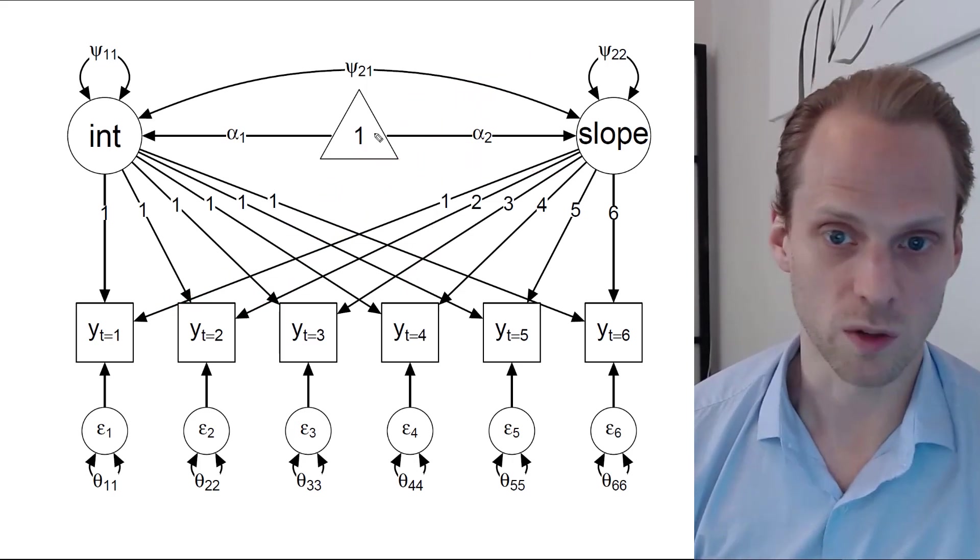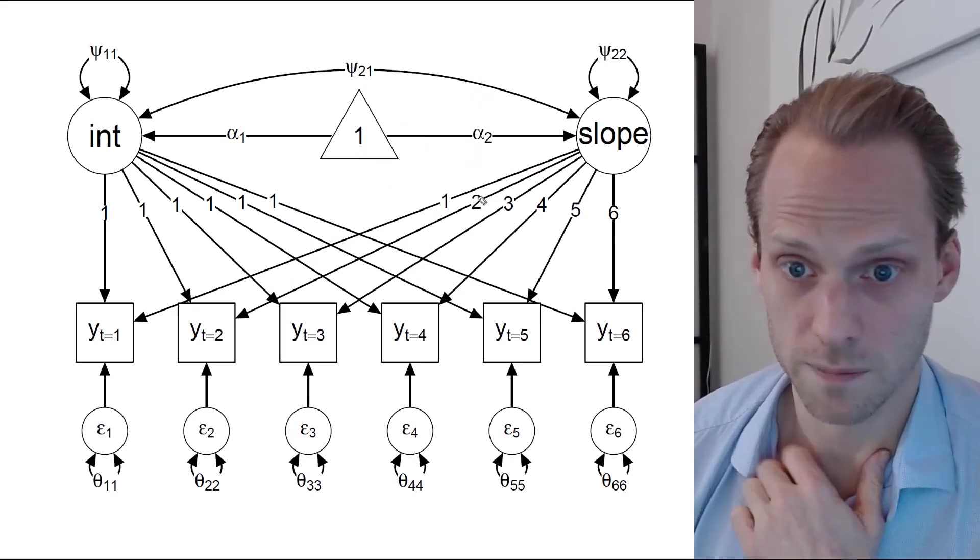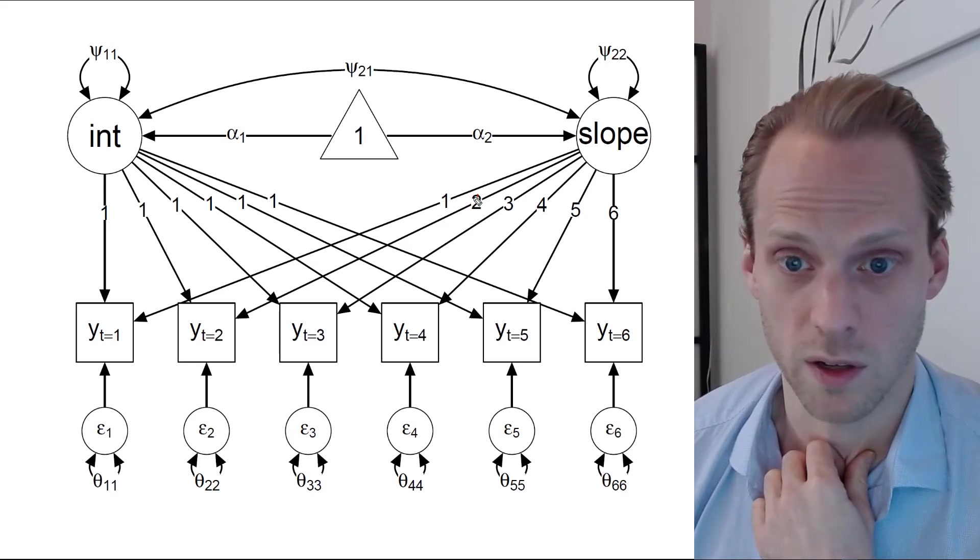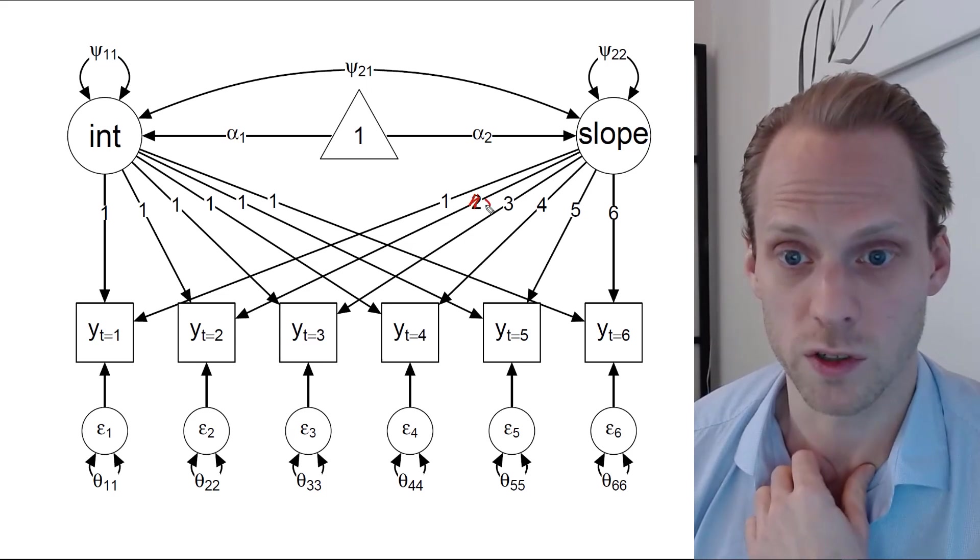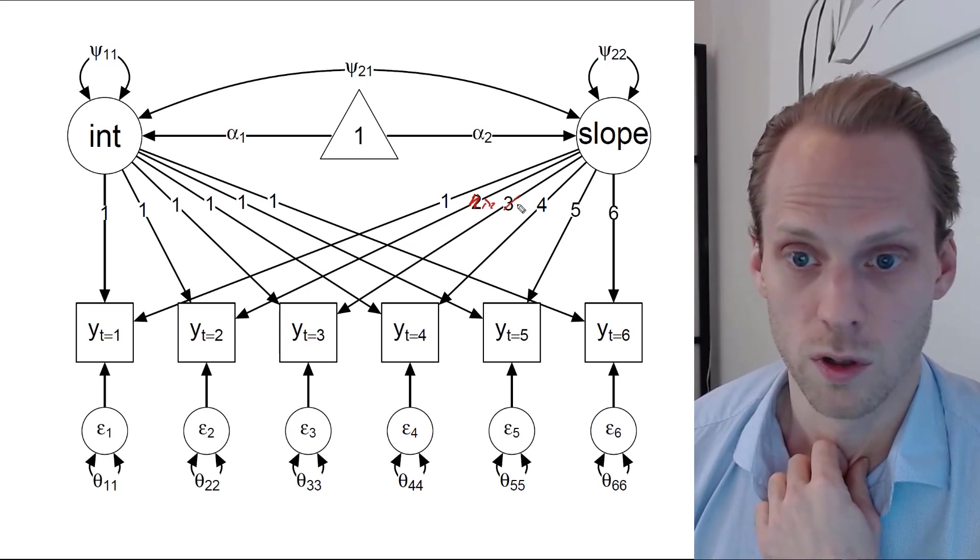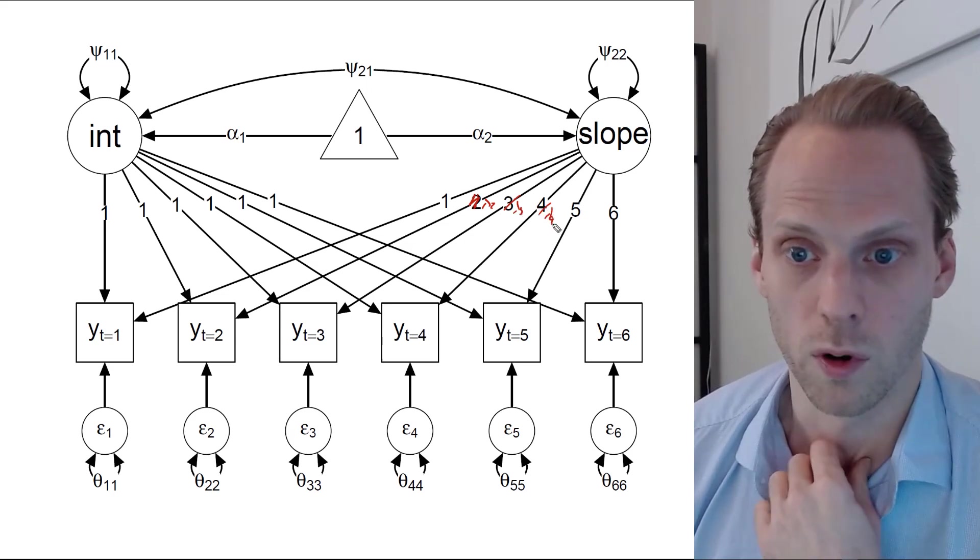Another option that you sometimes see is that these are still estimated. So we still say we estimate this is lambda 1, for example, we still say lambda 2, lambda 3, lambda 4.